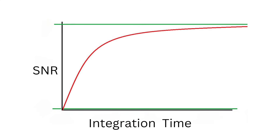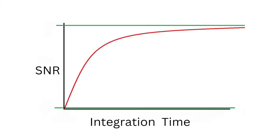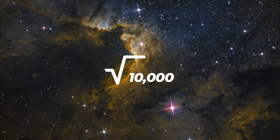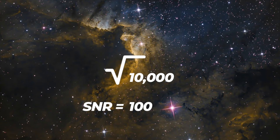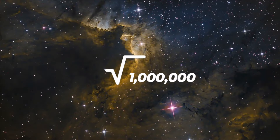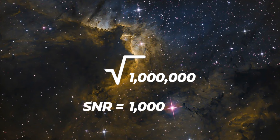But it slowly levels off, slowing down the benefits. For example, if we collected 10,000 photons with our total integration time, our signal-to-noise ratio is 100 — the square root of 10,000. If we increased our integration time so our signal reaches 1 million photons collected, then our signal-to-noise ratio jumps to 1,000.